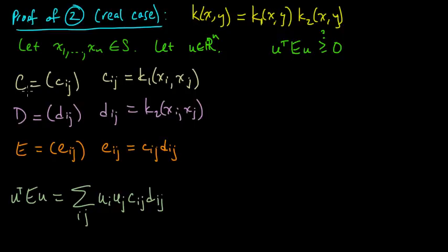Oftentimes, in proofs of things in math which are of intermediate difficulty, things which are not very difficult, but they're a little bit tricky, sometimes it just involves expanding out the objects and you just need to represent the structure that that object has. So here, the structure that these matrices C and D have is that they are positive semi-definite matrices. We know that because we know that k1 and k2 are positive semi-definite kernels.